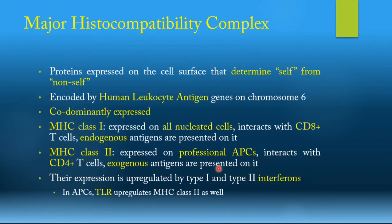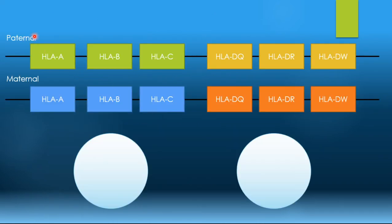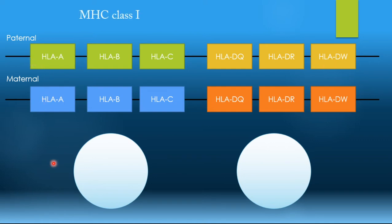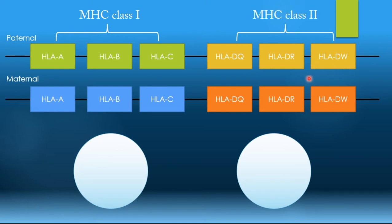Let's talk about co-dominance. On chromosome 6, we have two copies — a maternal and a paternal copy. On the paternal copy, you can find HLA genes: specifically HLA-A, B, and C, as well as DQ, DR, and DW — one paternal, one maternal. Genes A through C are responsible for forming MHC class 1 molecules, while DQ, DR, and DW are responsible for forming MHC class 2 molecules.